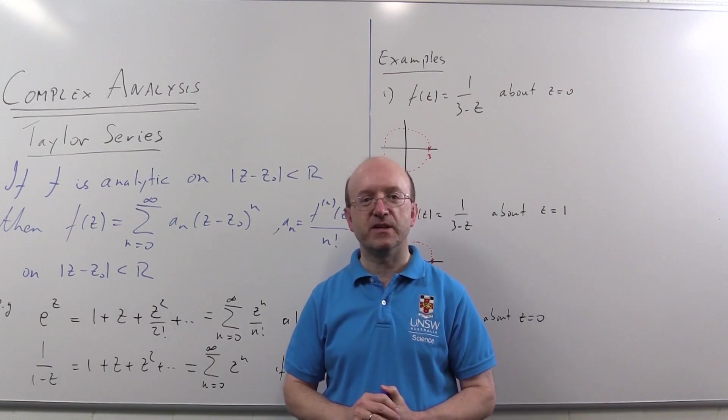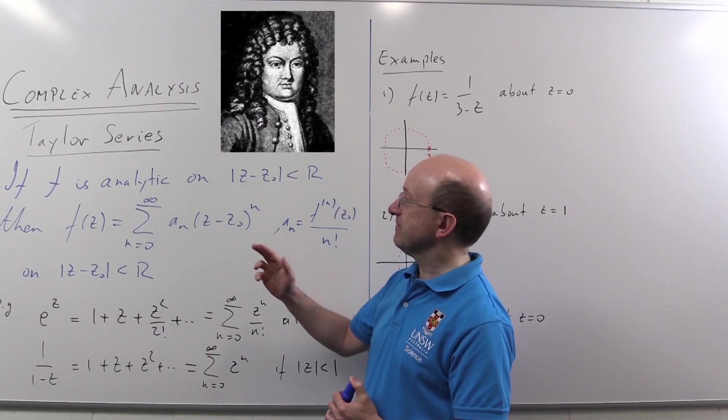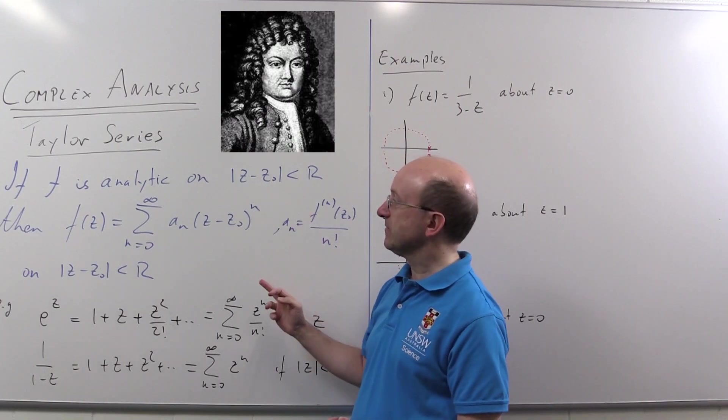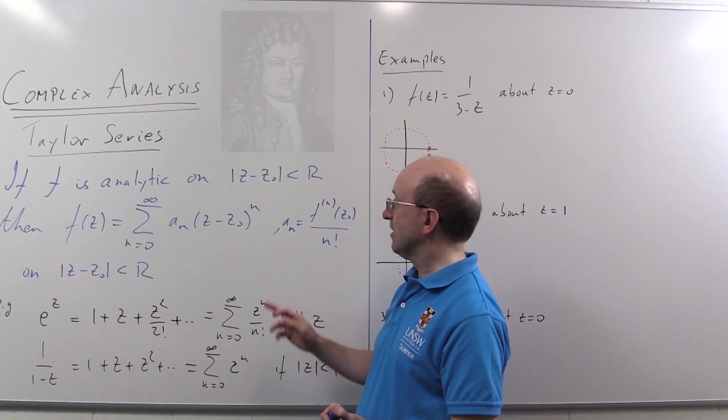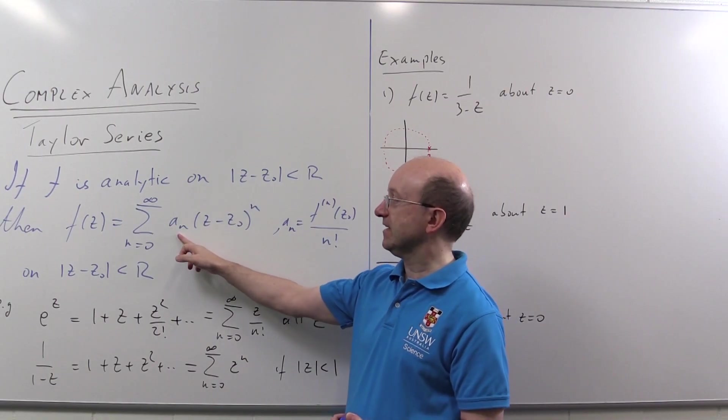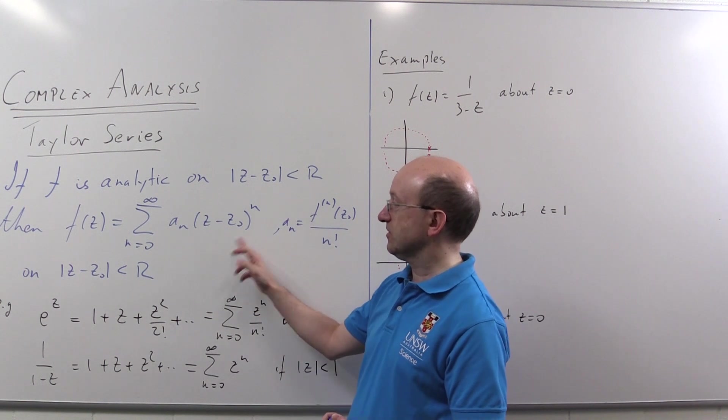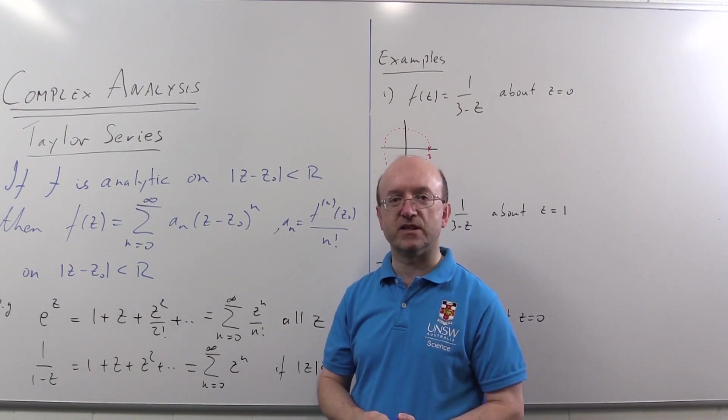This is an important theorem here, Taylor's theorem. If a given function is analytic on some disk centered at a point z0, then it can be represented as a power series, where the coefficients an are given by the nth derivative. And this series will work on mod z minus z0 less than r.